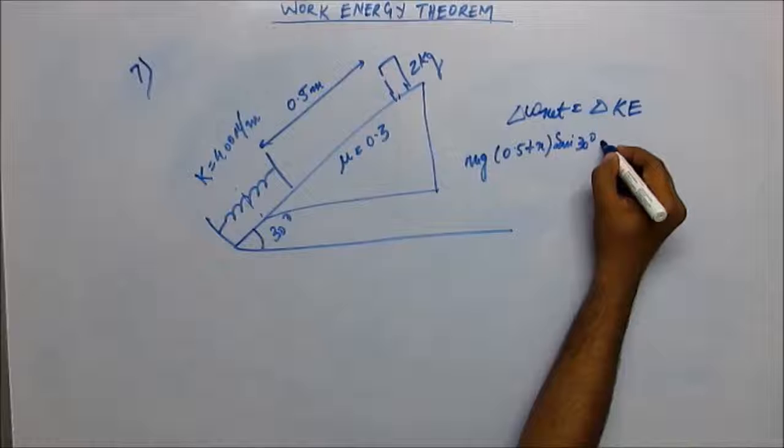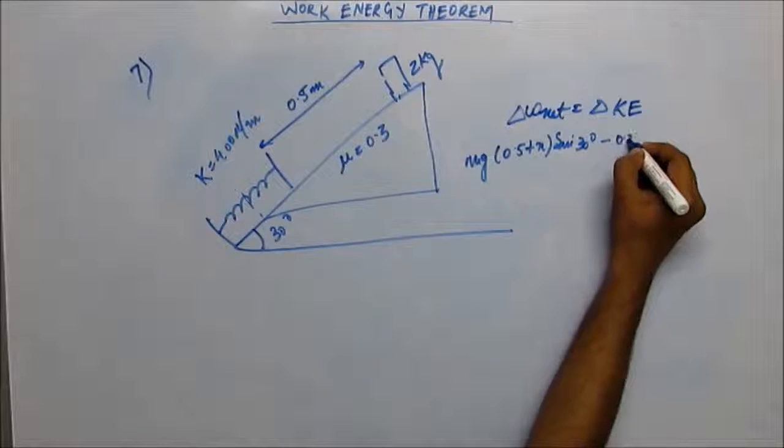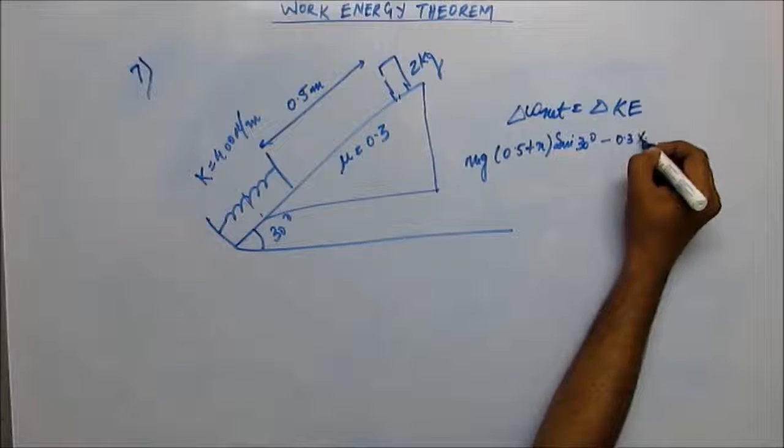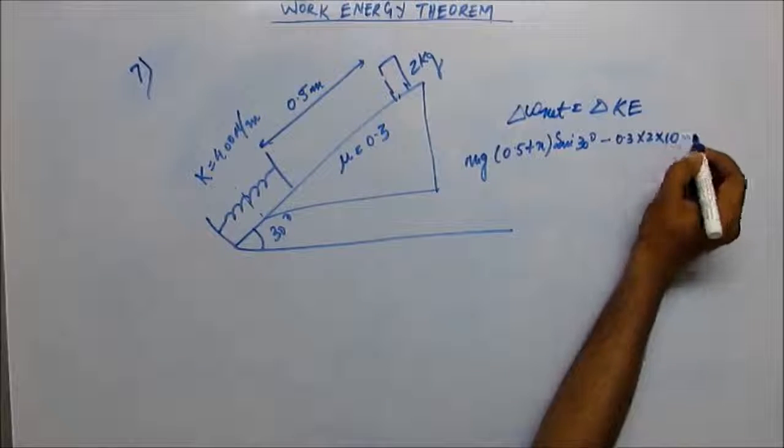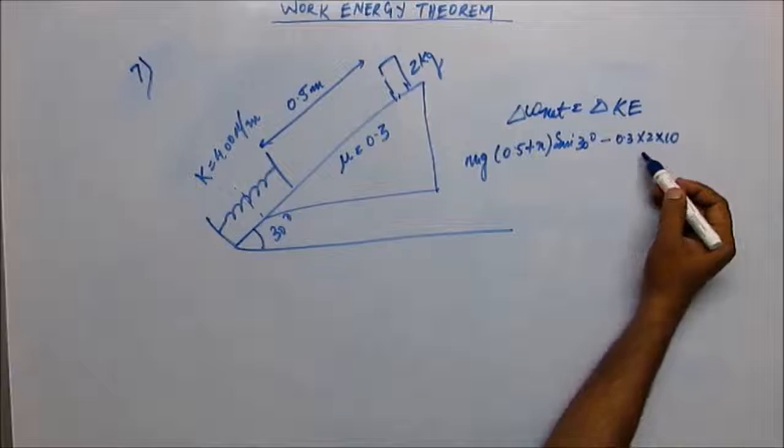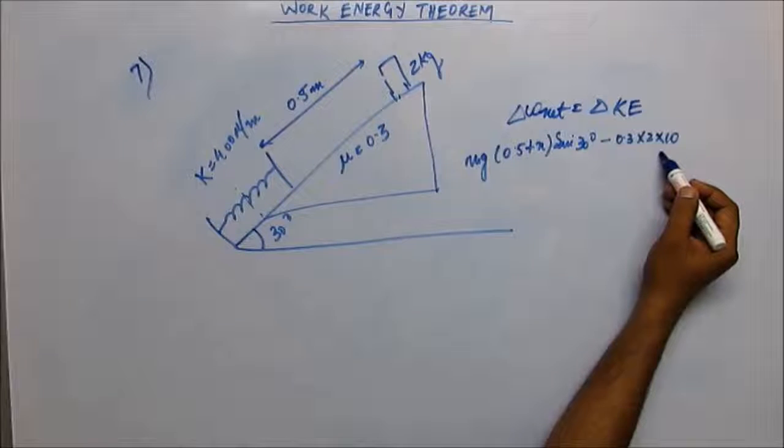So work done by friction will be 0.3 (mu) times 2 times 10, that is mg, normal reaction.